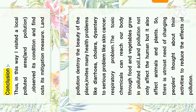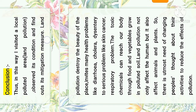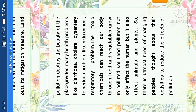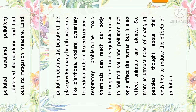Conclusion: in this way, I visited a local polluted area, observed its land pollution condition, and found out its mitigation measures. Land pollution destroys the beauty of the place and invites many health problems — from diarrhea, cholera, and dysentery to serious problems like skin cancer and respiratory problems. The toxic chemicals can reach our body through food and vegetables grown on this soil. Land pollution not only affects humans but also affects animals and plants, so there is an utmost need for changing people's thoughts about their activities to reduce the effects of pollution.